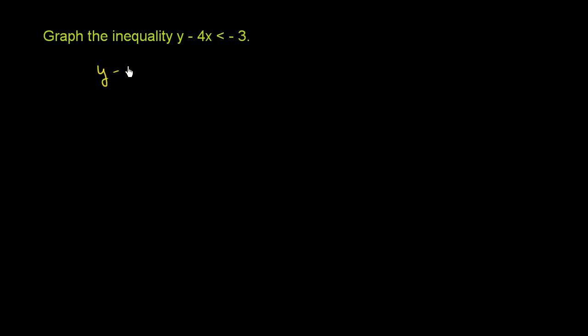So let's start with y minus 4x is less than negative 3. We can add 4x to both sides of this inequality. And then we'll just have a y on the left-hand side. These guys cancel out. So you have y is less than 4x minus 3.